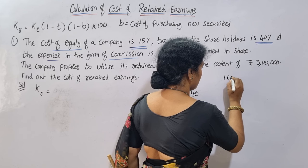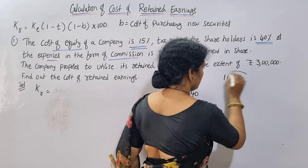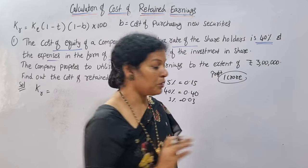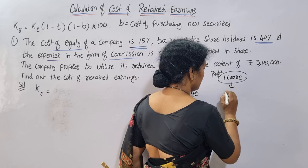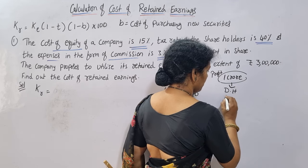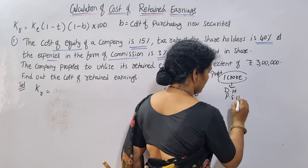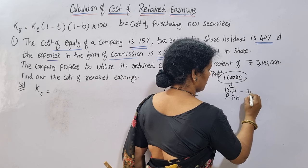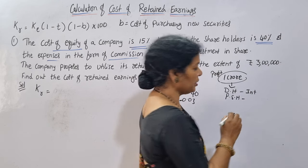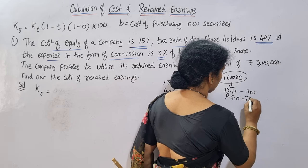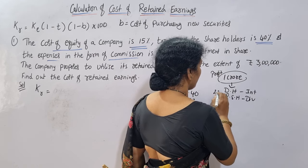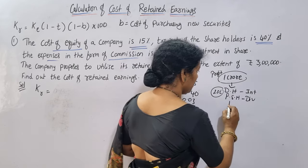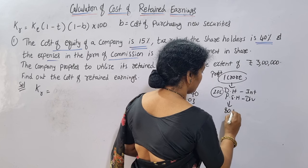I am going to talk about a 1 crore profit of St. Jester company. First, the debenture holders are paid. Then the preference shareholders — preference shareholders receive a dividend. Then I am going to talk about 20 lakhs. 20 lakhs is paid out of the 1 crore profit.